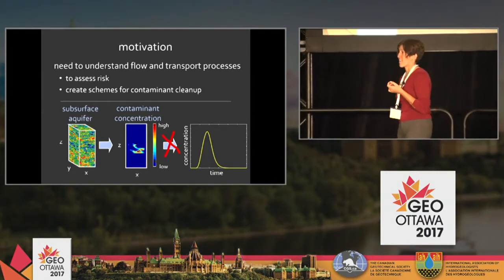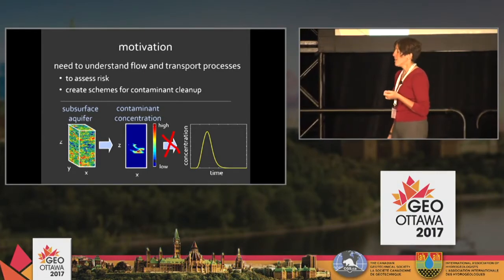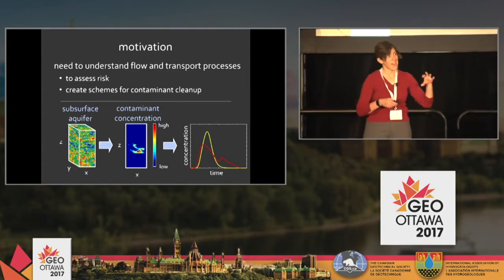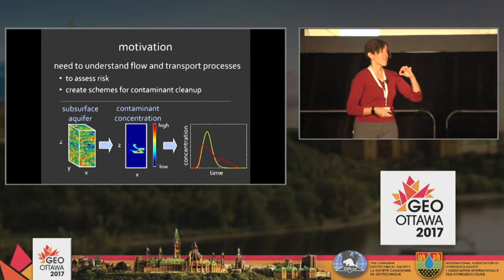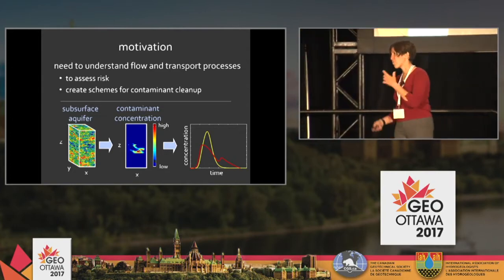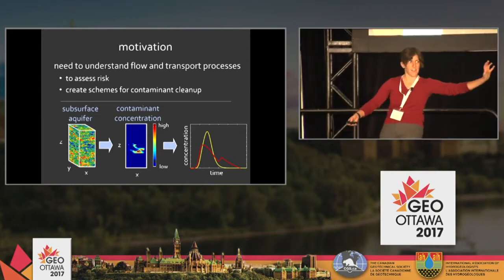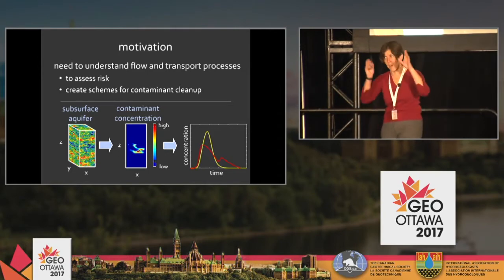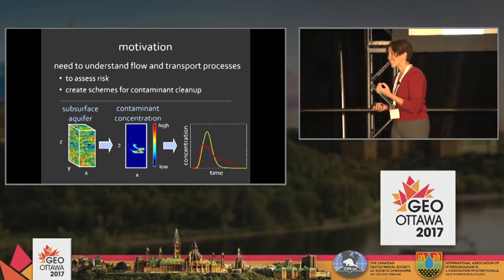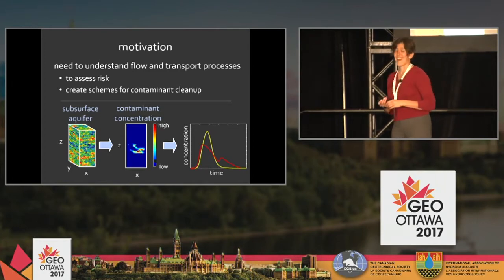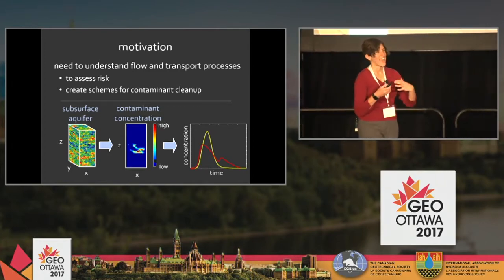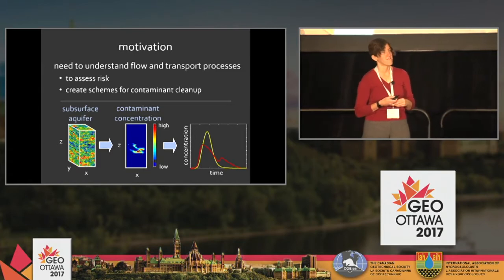What we know is that the subsurface is highly complex, meaning our plumes are really funny shaped — they have little legs that stick off the back, stuff gets stuck. Our concentration histories aren't almost Gaussian; they have weird things like long tails out the back end and double humps. It's hard to make predictions when our forward models don't quite handle some of the dynamics we see in the field.